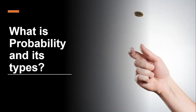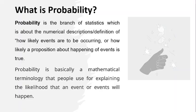Let's start with what is probability. Probability is the branch of statistics which is about numerical description or definition of how likely events are to occur, or how likely a proposition about the happening of an event is true.